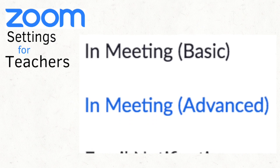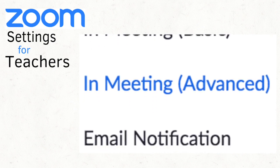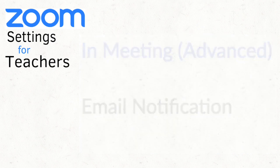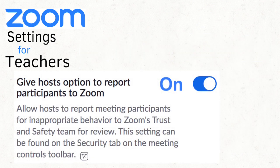This takes us to In Meeting Advanced. Give Hosts Option to Report Participants to Zoom. This option allows teachers to report students for inappropriate behavior to Zoom's trust and safety team for review. I'll probably never have to use it, but it's nice to have that option, so I turn this feature on.